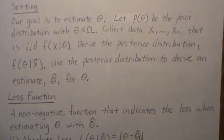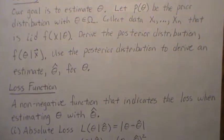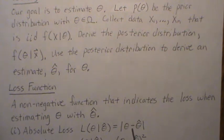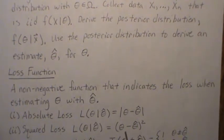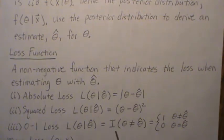A loss function is a non-negative function that indicates the loss when estimating theta with theta hat. The first of three is absolute loss: |theta minus theta hat|. It makes intuitive sense — if theta hat is close to the unknown parameter, we get a small number, zero if they're equal, and a larger number if they're far apart. Squared loss is the squared distance between our estimate and the unknown parameter. The zero-one loss is one if they're not equal and zero if they are equal.